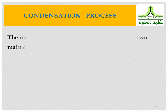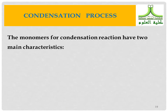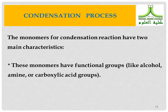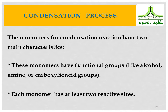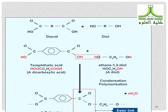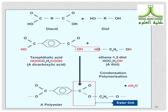In the condensation process, the monomers for condensation reactions have two main characteristics: they have functional groups such as alcohol, amine, or carboxylic acid groups, and each monomer has at least two reactive sites. An example is the formation of polyester with ester linkages from terephthalic acid and ethane-1,2-diol.